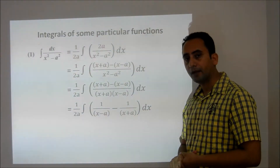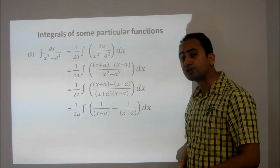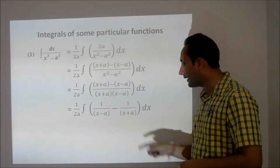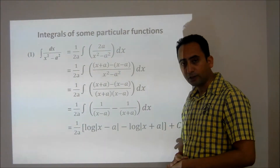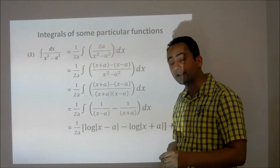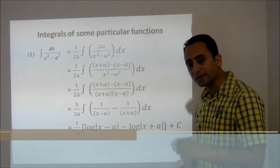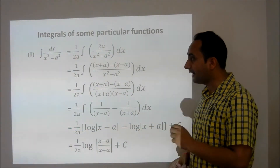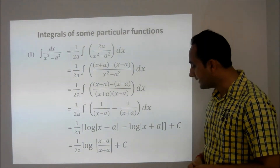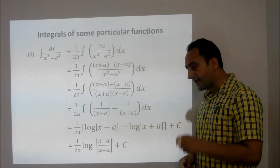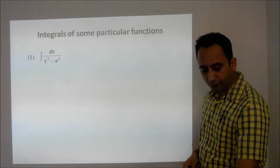We have already discussed that integral of 1 upon x minus a is log of x minus a, and integral of 1 upon x plus a is log of x plus a. An important property of logarithm is log a minus log b can always be written as log a upon b. So ultimately, integral of 1 upon x squared minus a squared dx is 1 upon 2a times log of x minus a upon x plus a, plus a constant. This is the formula.